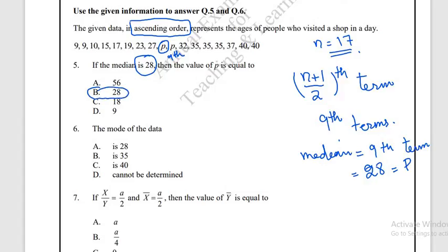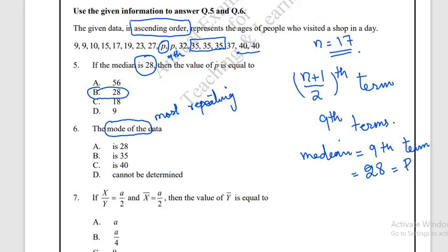For question 6, we need to find the mode of the data. The mode is the most frequently occurring value. Looking at the data: 35 occurs 3 times, P occurs 2 times, 42 occurs 2 times, and 9 occurs 2 times. The most occurring value is 35, appearing 3 times. So the correct answer is option B: 35.